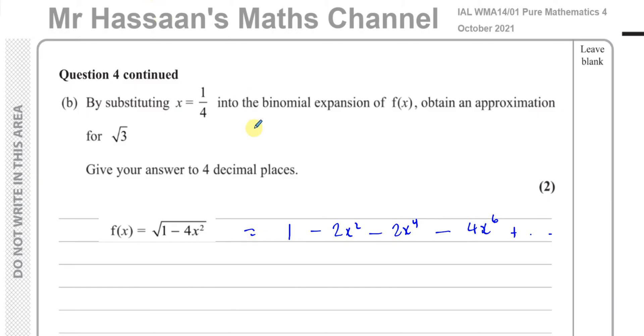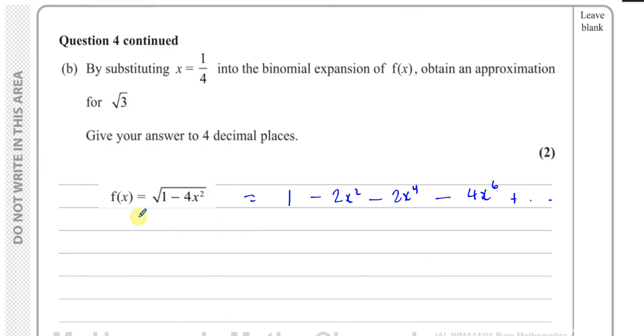Now for part B, it tells us by substituting x equals a quarter into the binomial expansion of f(x), obtain an approximation for root 3, give your answer to 4 decimal places. So we're going to substitute x equals a quarter. First I'll substitute into here and see what happens. So I'll have 1 minus 4 times a quarter squared. So that gives us the square root of 1 minus 4 over 16, which is going to give us the square root of 1 minus a quarter, which is the square root of 3 over 4, which will be the same as root 3 over 2.